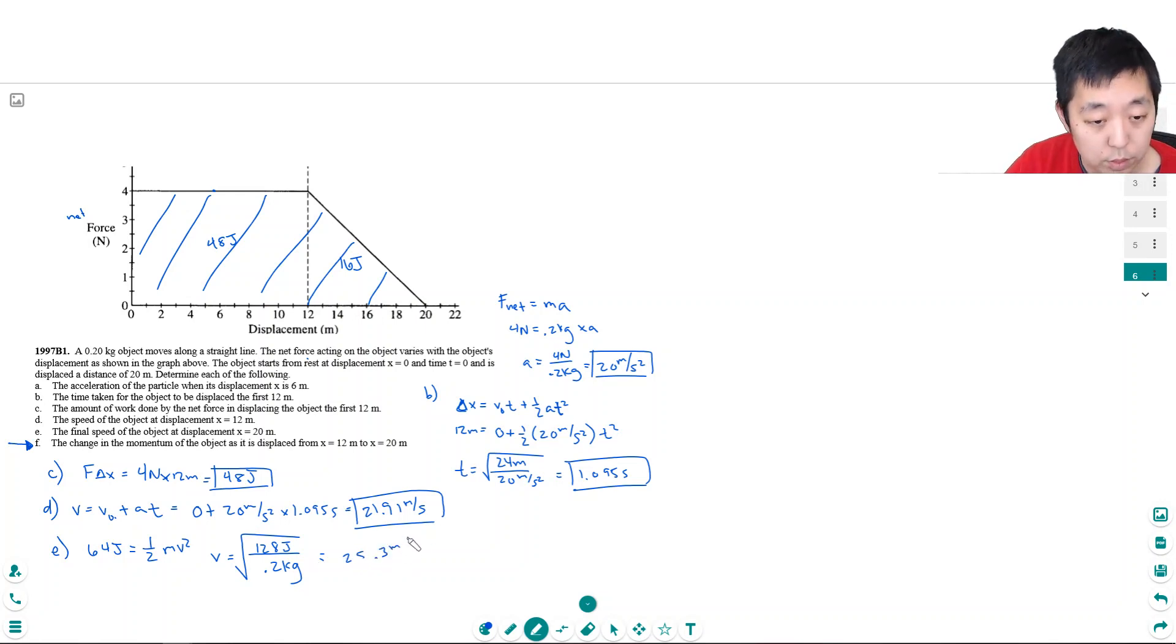And then finally, Part F: the change in momentum of the object as it displaces from 12 to 20 meters. Change in momentum is m delta v, right? Technically momentum can change if the mass changes, but that is not a common thing that happens. So the mass is really—it's the velocity that's changing. So it's 0.2 kilograms, and I want to know simply the change in velocity. Well, it ended up at 25.3 meters per second and it started at 0 meters per second.